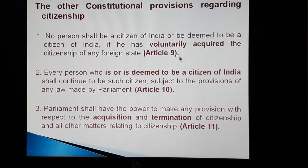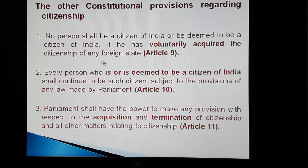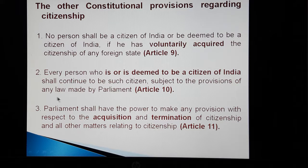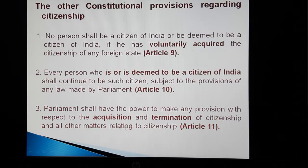Now we are going to discuss provisions under Articles 9 to 11 of the constitution. Article 9 says that no person shall be a citizen of India if he has voluntarily acquired the citizenship of any foreign state. Article 10 prescribes that every person who is or is deemed to be a citizen of India shall continue to be such citizen subject to the provisions of any law made by the parliament. Article 11 says that the parliament shall have the power to make any provision with respect to the acquisition and termination of citizenship and all other matters relating to citizenship.